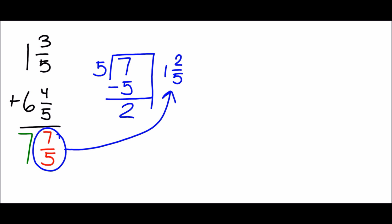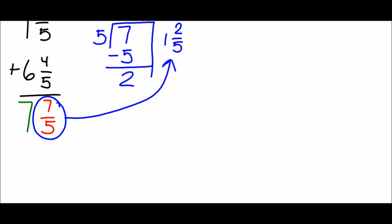We changed that seven-fifths into one and two-fifths, so we won't use the seven-fifths anymore. We take that one and two-fifths and add it to the whole number seven in our answer — that's how you regroup it as a mixed number. Two-fifths plus nothing is two-fifths, and seven plus one is eight. The answer is eight and two-fifths.